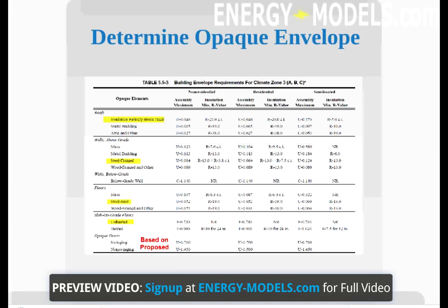Appendix G specifies the type of roofs, above-grade walls, floors, and slab-on-grade floors. The type of doors used are based on the type of doors used in the proposed building. The U-value is selected based on the type of building and the opaque elements highlighted here. Once the appropriate values are decided, the baseline building should be edited to use these values.